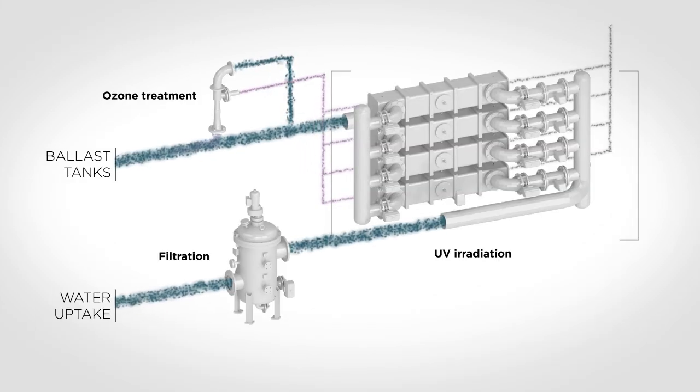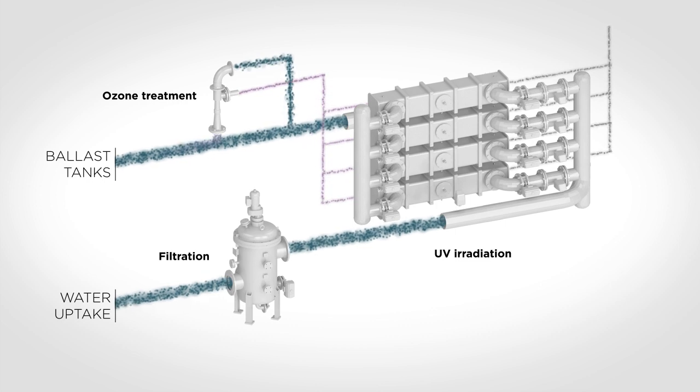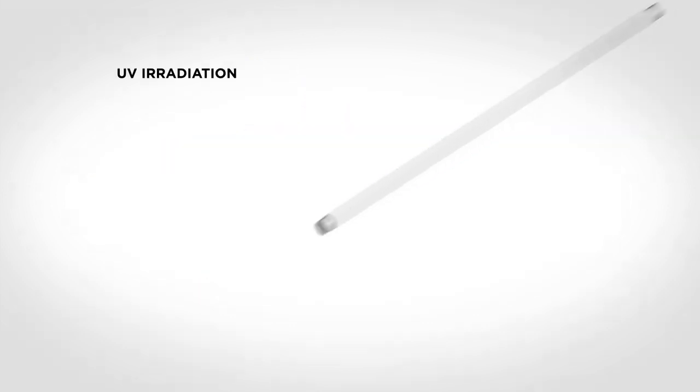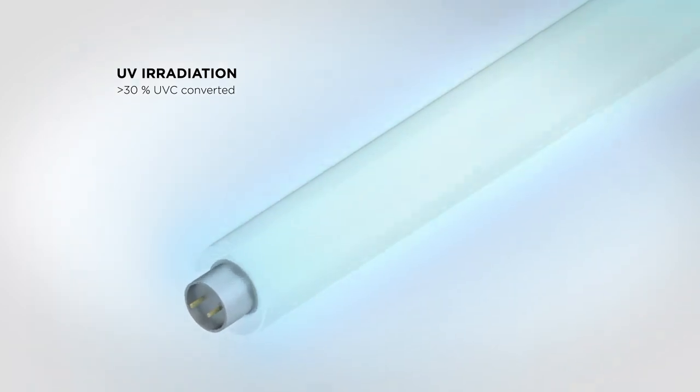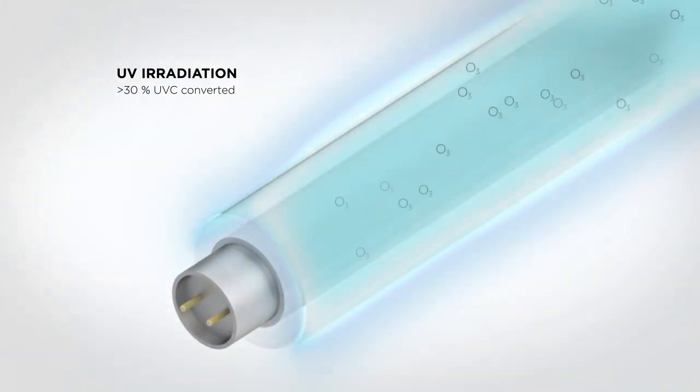The second treatment step is UV irradiation with low-pressure lamps. The advantage of low-pressure UV lamps is that more than 30% of the energy to the lamps is converted into UV-C, which makes the organisms non-viable.